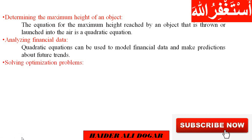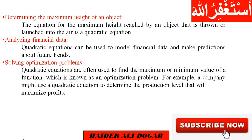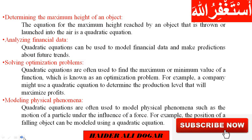5. Solving optimization problems. Quadratic equations are often used to find the maximum or minimum value of a function, which is known as an optimization problem. For example, a company might use a quadratic equation to determine the production level that will maximize profits. 6. Modeling physical phenomena. Quadratic equations are often used to model physical phenomena such as the motion of a particle under the influence of a force. For example, the position of a falling object can be modeled using a quadratic equation.